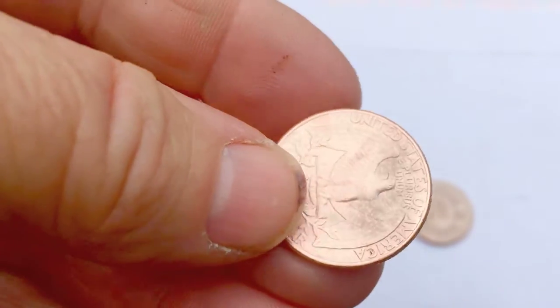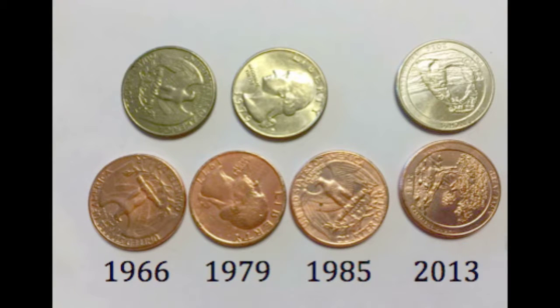I did multiple years of quarters to see if it affected it in any way. As you can see, I did 1966, '79, '85, and 2013. They all came out pretty copper. A couple of them varied a little bit, but a pretty cool experiment.